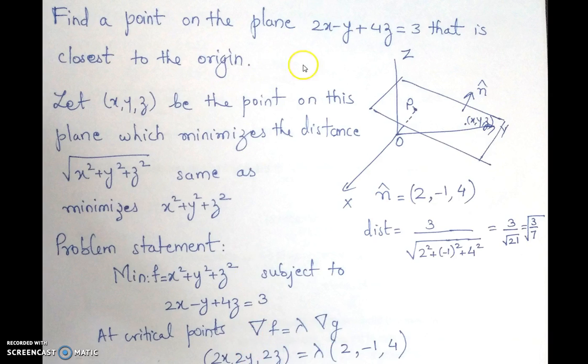So let us write down grad of f, that is (2x, 2y, 2z), which is lambda times grad of g, that is (2, minus 1, 4).